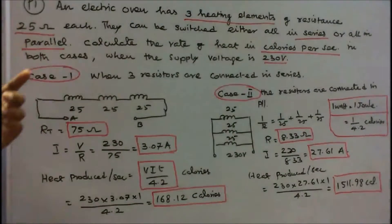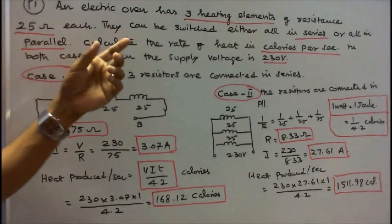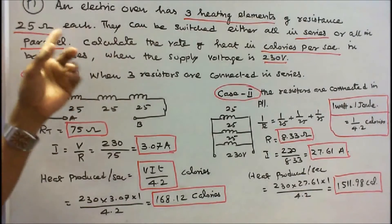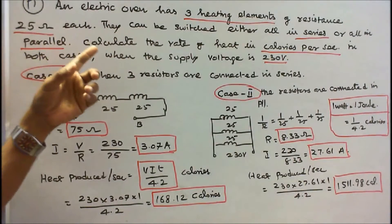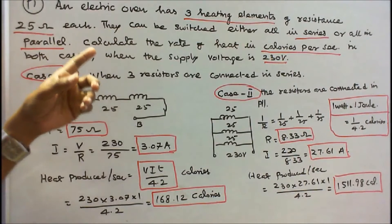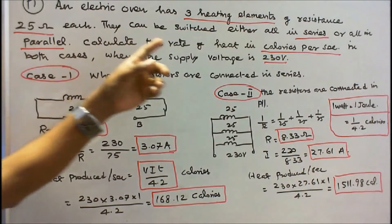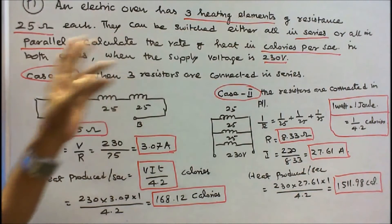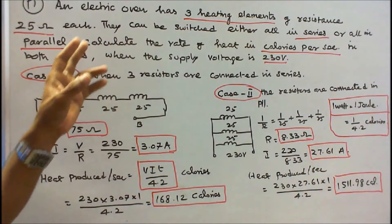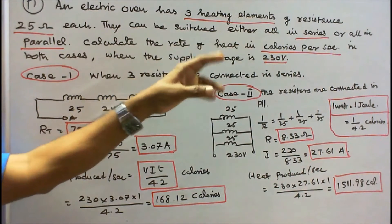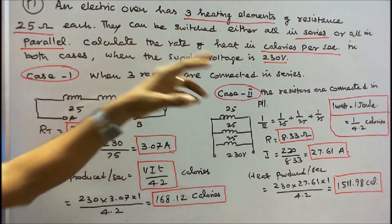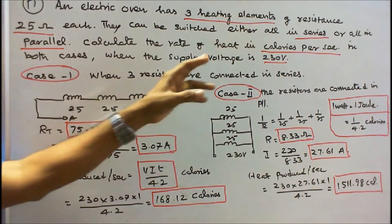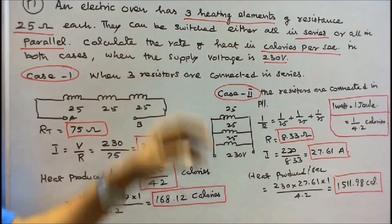Problem 1: An electric oven has 3 heating elements of resistance 25 ohms each. They can be switched either all in series or all in parallel. Calculate the rate of heat in calories per second in both cases when the supply voltage is 230 volts.